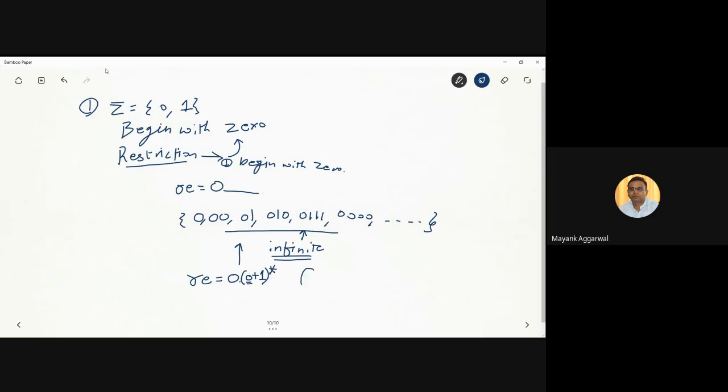इसका अगर हम automata देखें - अपने experience से direct बनाने की कोशिश करें. So it should begin with zero, and alone zero is also accepted. And on reaching the acceptance state, it can have anything - anything means any number of zeros and ones. This is the initial state. ये इसका automata भी बन जाएगा.